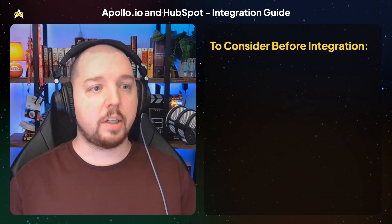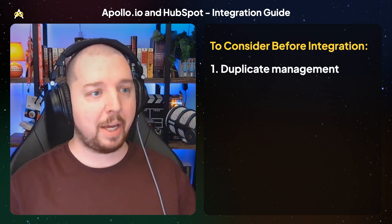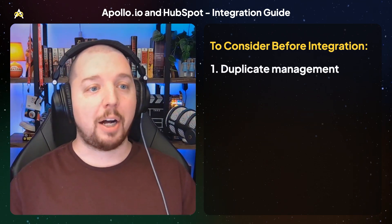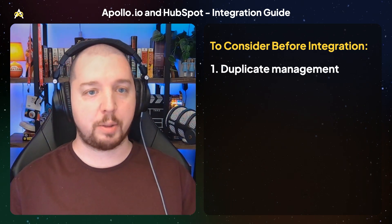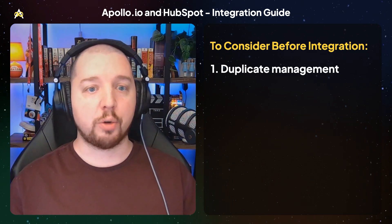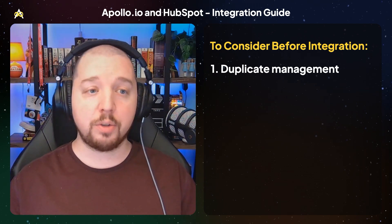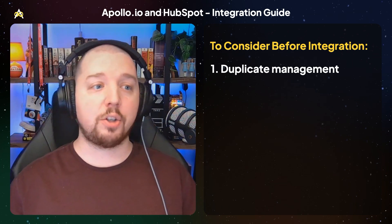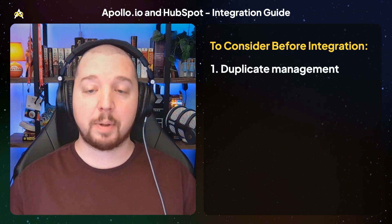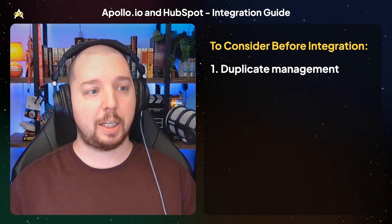There are a few things you should consider when integrating HubSpot and Apollo. One is duplicate management. When they're integrated, Apollo will mirror whatever data is in your HubSpot account. So if you have duplicates of your contacts or companies, those are also going to appear in Apollo. Before you integrate, you should deduplicate the data in your HubSpot account so only clean data syncs over to Apollo.